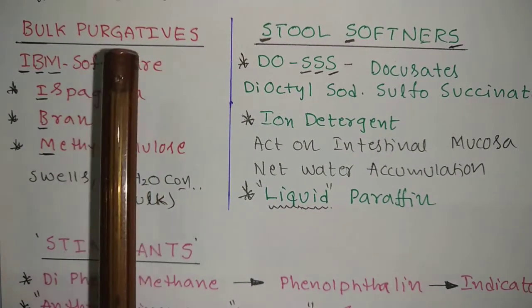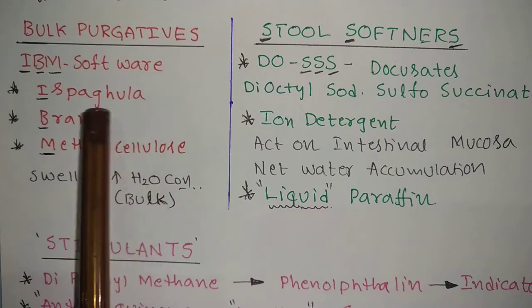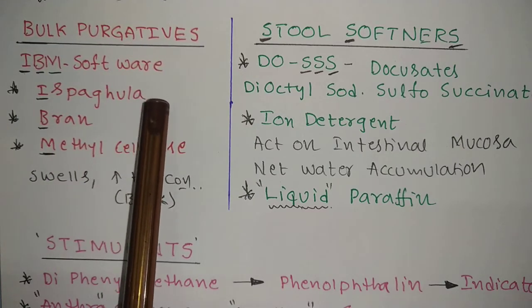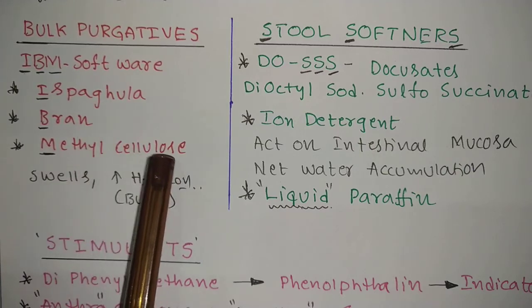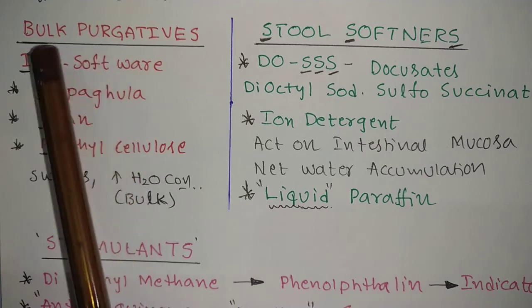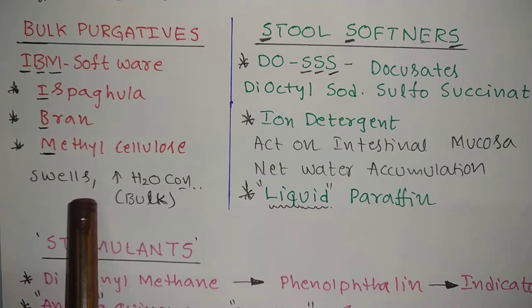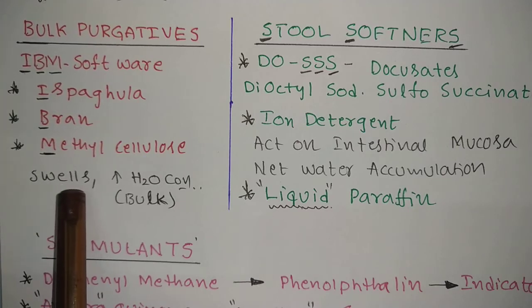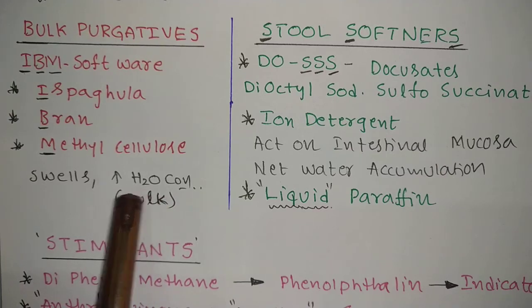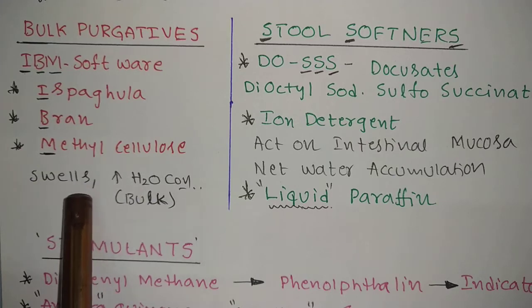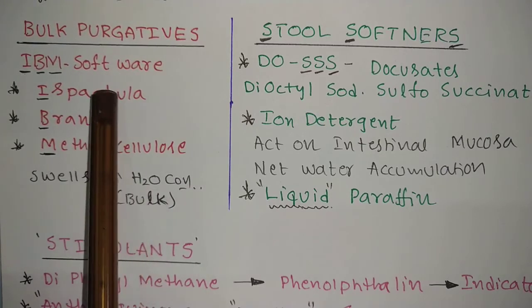The first class is bulk purgatives. Examples include isabgula, which comes from plant seeds and is very good for constipation, bran, and methyl cellulose. The name indicates 'bulk' because these drugs are not absorbed — they remain in the small intestine, start swelling by increasing water retention (H2O), and the fecal matter is excreted the following morning.